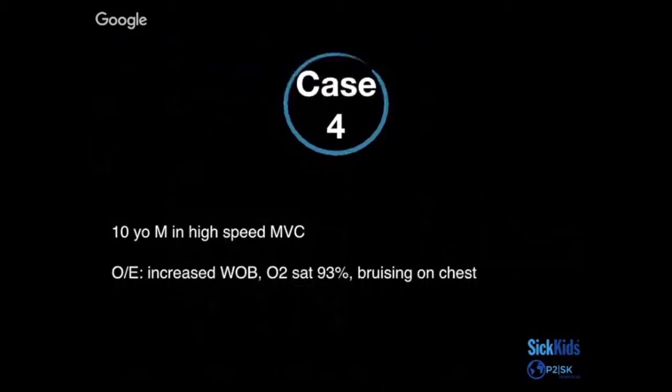Case four involves a 10-year-old boy who was in a high-speed motor vehicle collision with multiple other injuries. On exam, he had increased work of breathing, was saturating in the low 90s, and had bruising to the chest. While waiting for the chest X-ray due to other management priorities, you want to determine whether this increased work of breathing is from pulmonary contusion, hemothorax, or pneumothorax — and this is a good time to bring in your probe.